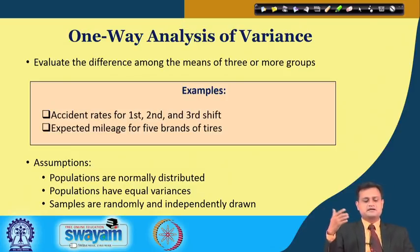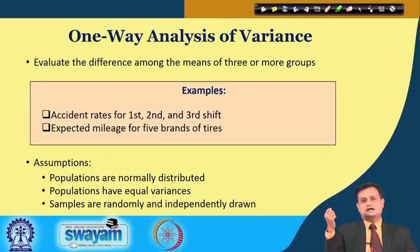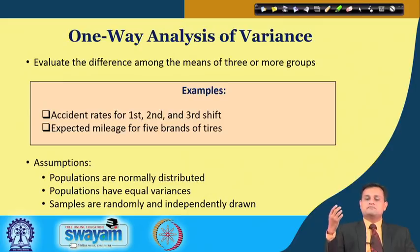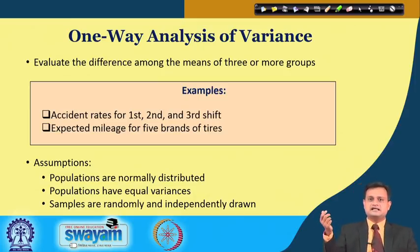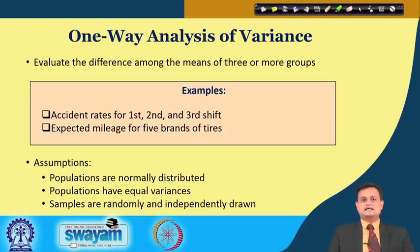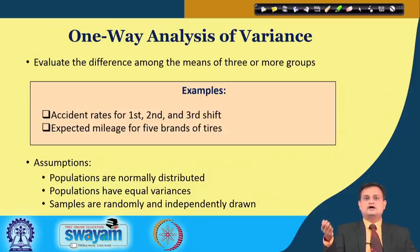Similarly, you can think about expected mileage for five brands of tires — for example, MRF, Apollo, C8, or JK Tire. I want to see whether there is a statistically significant difference in the average mileage or life of each particular brand tire, or if they are more or less the same. This is a fit case for conducting ANOVA analysis. Now, it is very important to note that statistical analysis is always based on certain assumptions, and if these assumptions are not respected or validated, your analysis will not have much value.